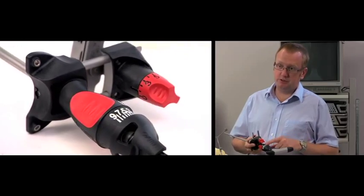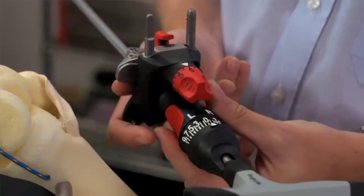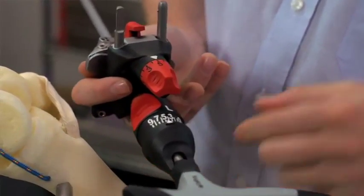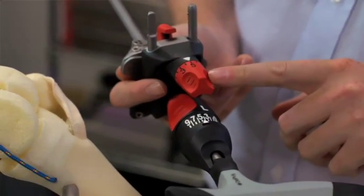So for the varus valgus adjustment, we've used white on black. For the distal resection, we've used black on red.